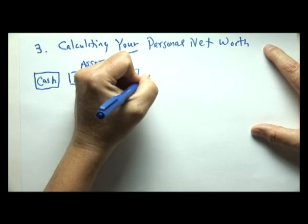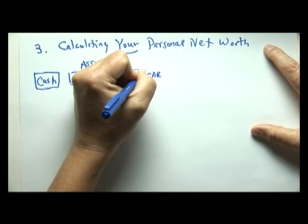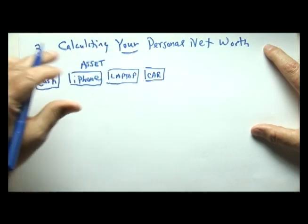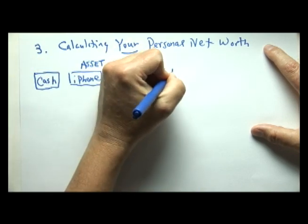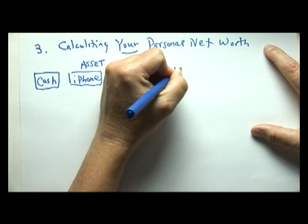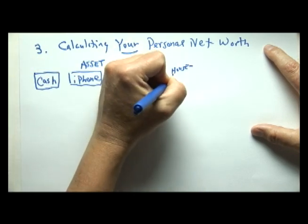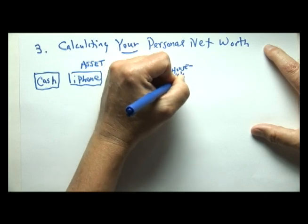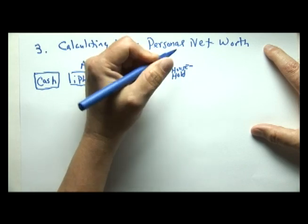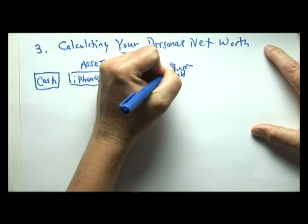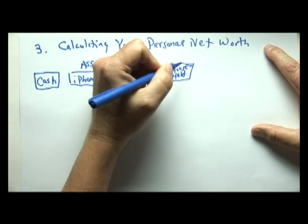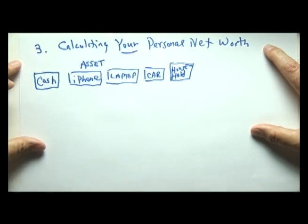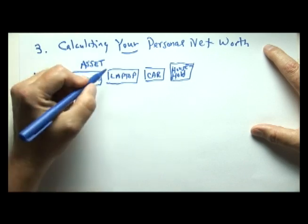You have a used car that you drive to campus — it's yours. And of course you have household effects: your bed, your TV, your furniture, your clothes. We'll call all of that household effects. Now let's assign a value to each of these assets.